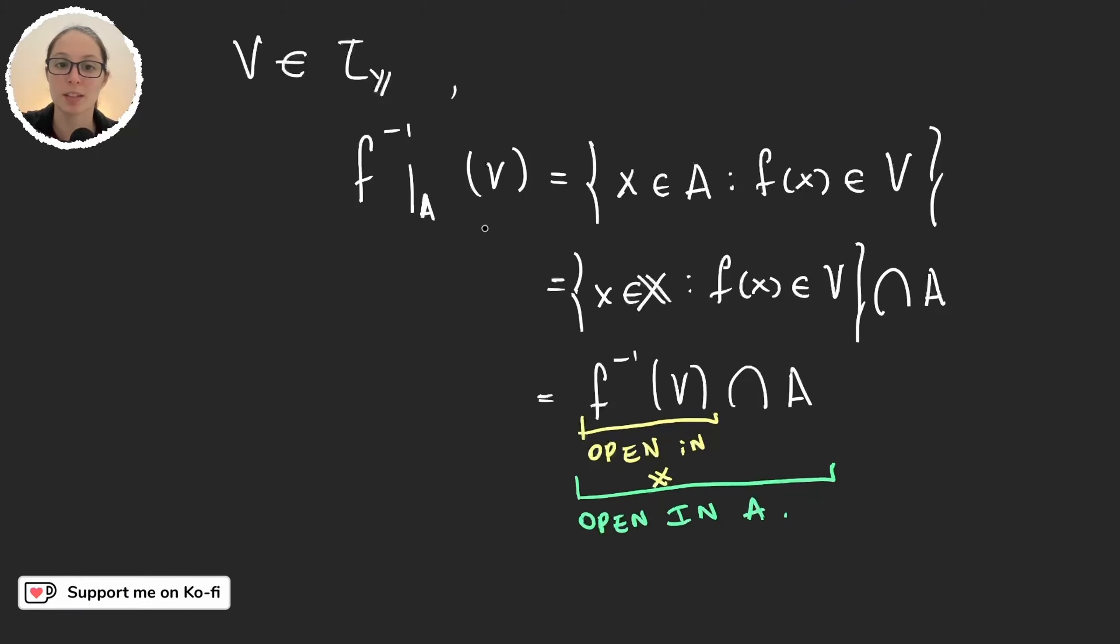So that proves that the preimage of b in the restriction function is an open set, and so the function is continuous.